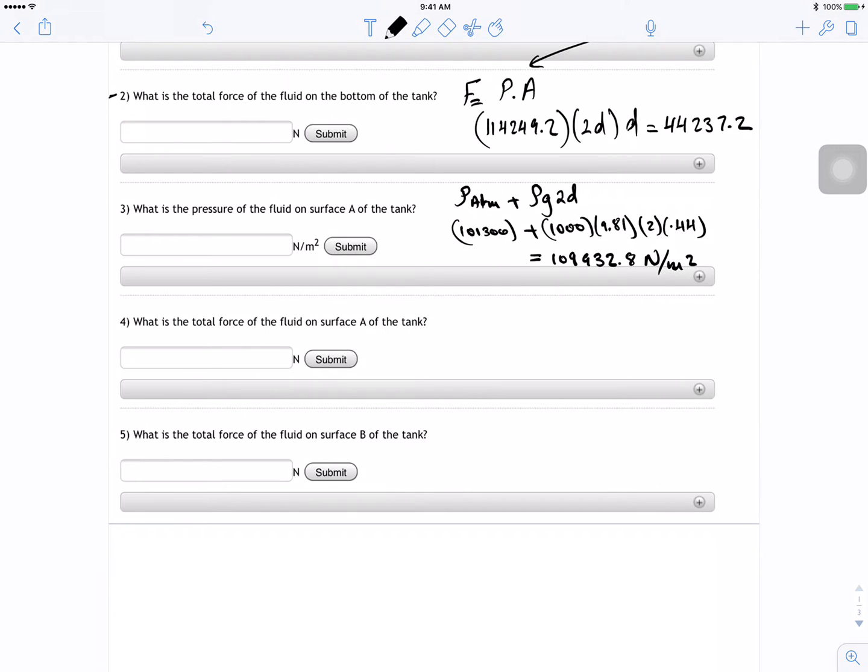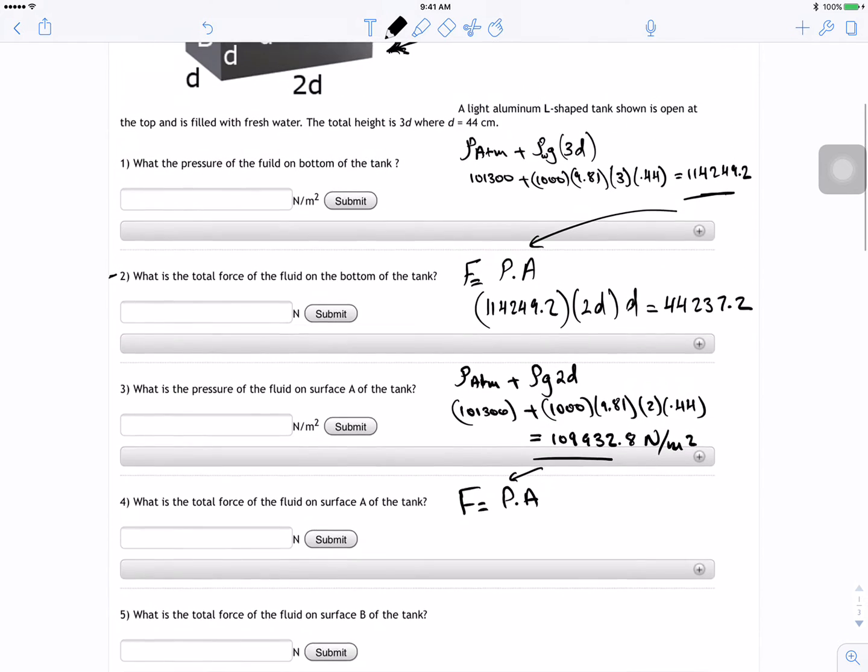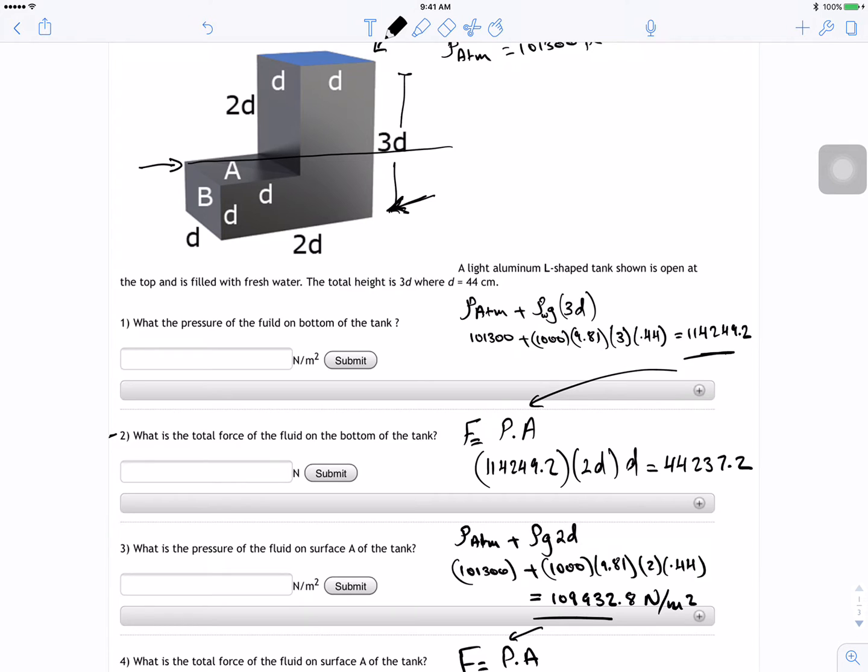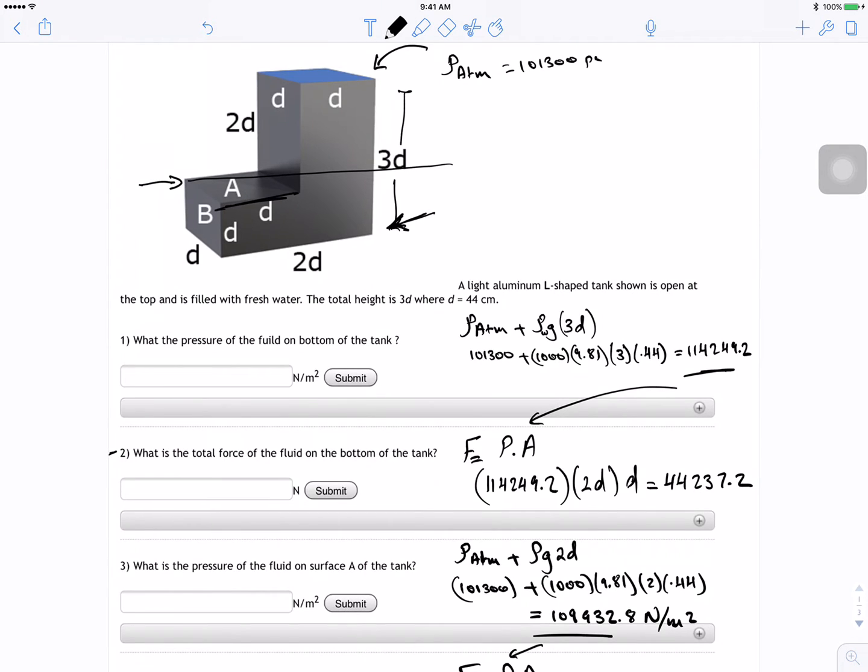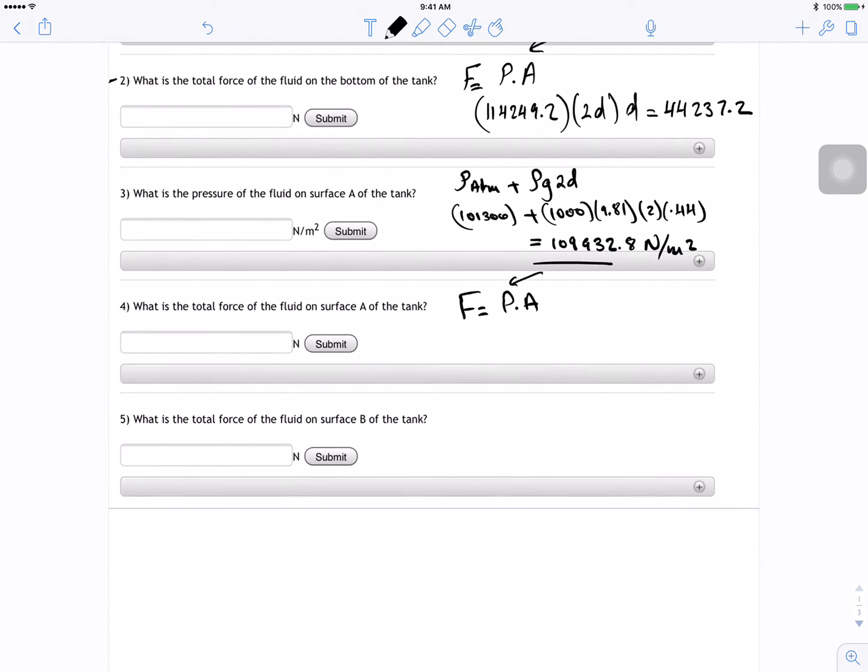Now what's the total force of the fluid on the surface of A? We do the same thing. Force is equal to pressure times area. So the answer you get from here, you plug it in here. Then the area of A is just d squared, which is just from here to here. This area is just d squared. So 109932.8 times the area which is just d squared, 0.44 squared. And for this guy I got 21282.99.